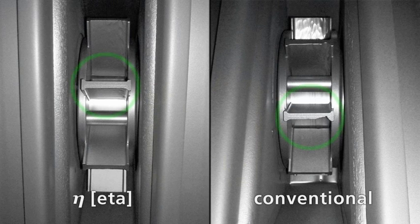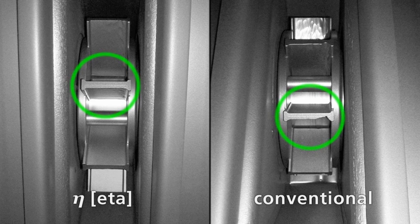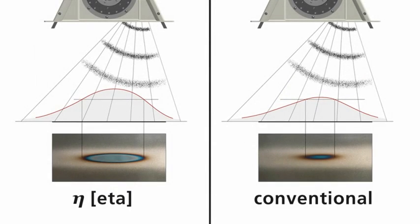All in all, the use of the new turbine generation ETA grants a higher efficiency and a more homogeneous blast result with lower expenditure of energy and lower wear and tear compared to conventional turbine wheel systems.